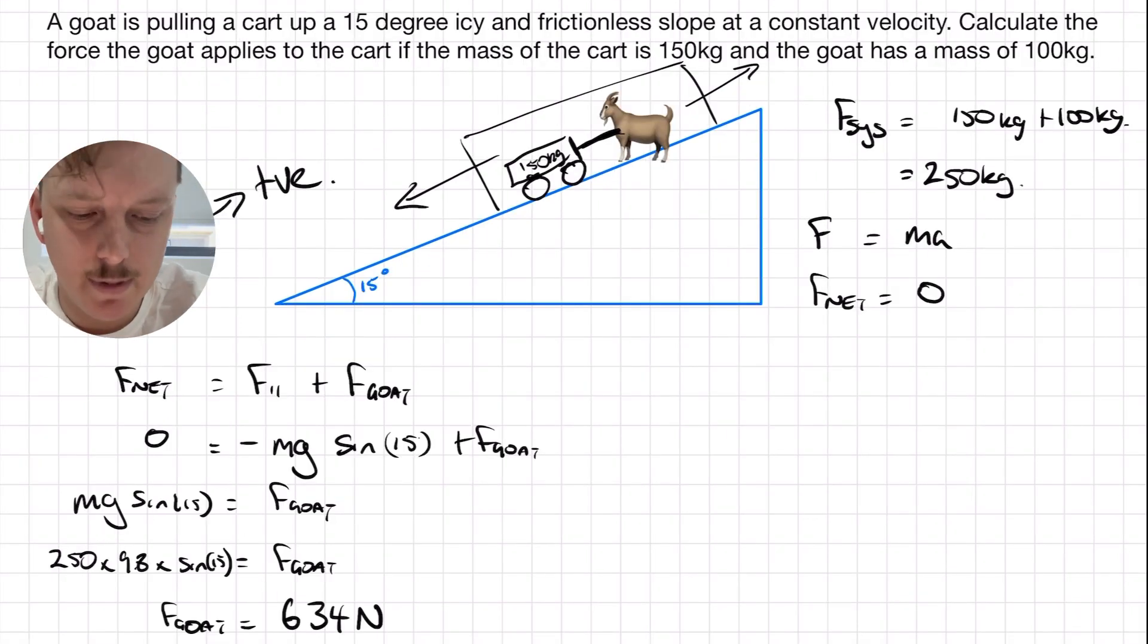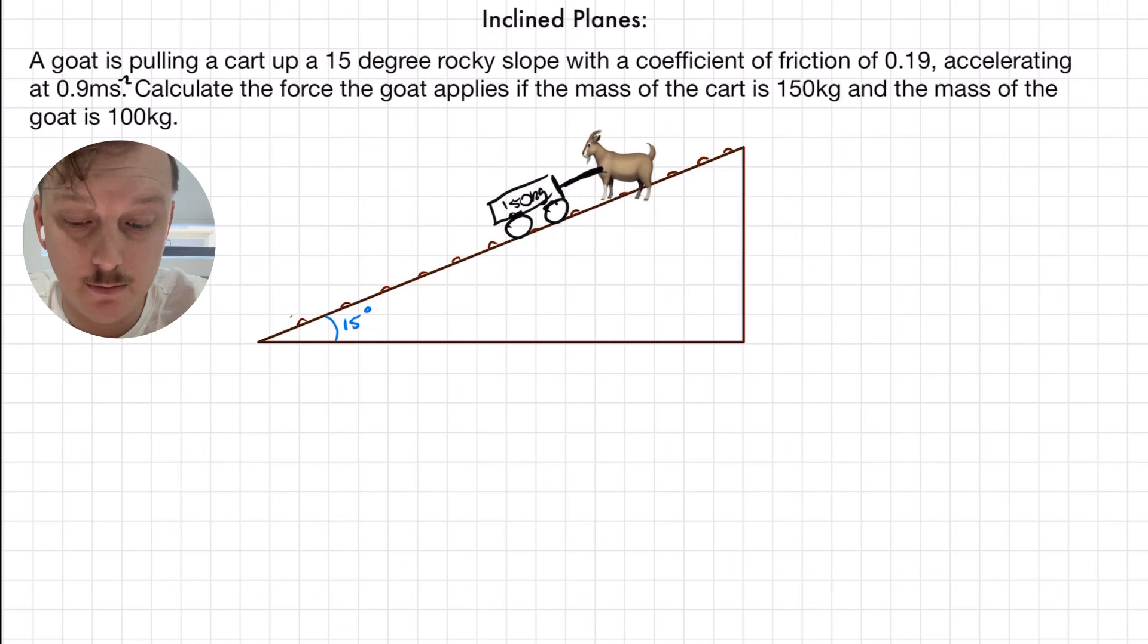Our final example is about as complicated as it's going to get without combining these ideas with other ideas like ideas in projectile motion or circular motion. So, in this case, we have to consider friction. Now, we're going to recall that the force due to friction is going to oppose the motion of the goat and cart system. And it's going to be equal to the coefficient of friction times the normal force. So, now we're going to need to figure out not just the force down the plane, parallel force, but also the perpendicular force.